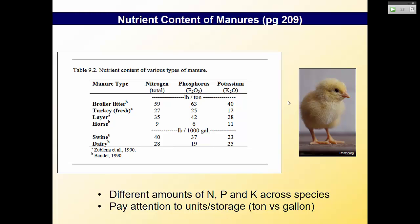The nutrient content of manures — page 209 — varies. It's not just how much is produced, but every animal has a different amount of N, P, and K. Some people say horse manure has no nutrient value, but it does — it's just lower, about one-third of what you'd get from chickens in nitrogen. Broiler, turkey, layer, swine, and dairy all have different amounts of nitrogen, phosphorus, and potassium, which affects how much you can apply from different animal types.